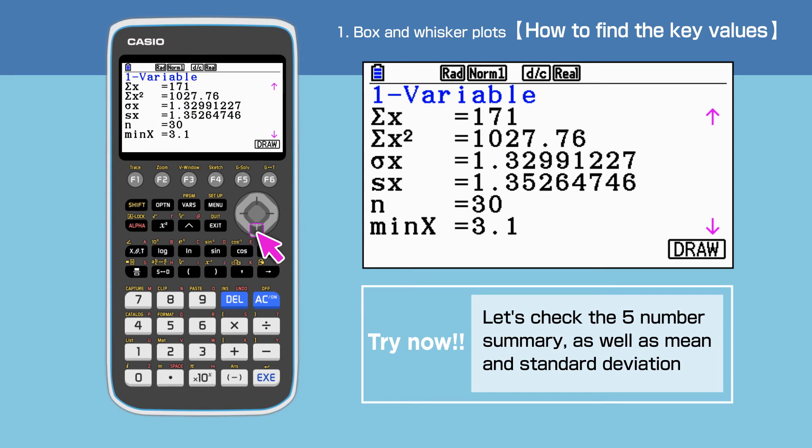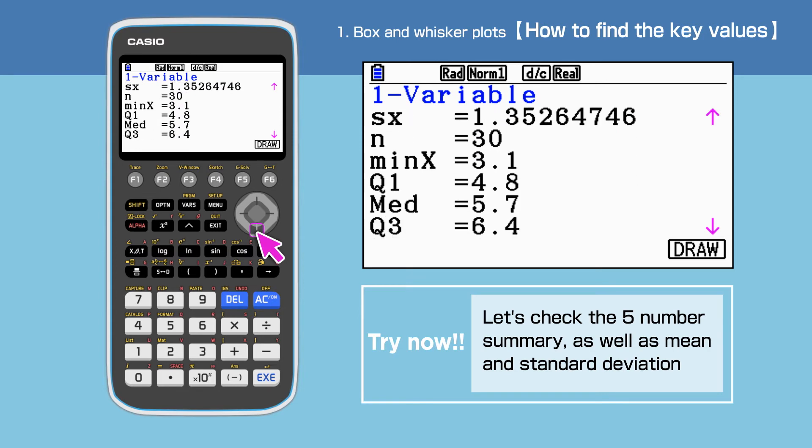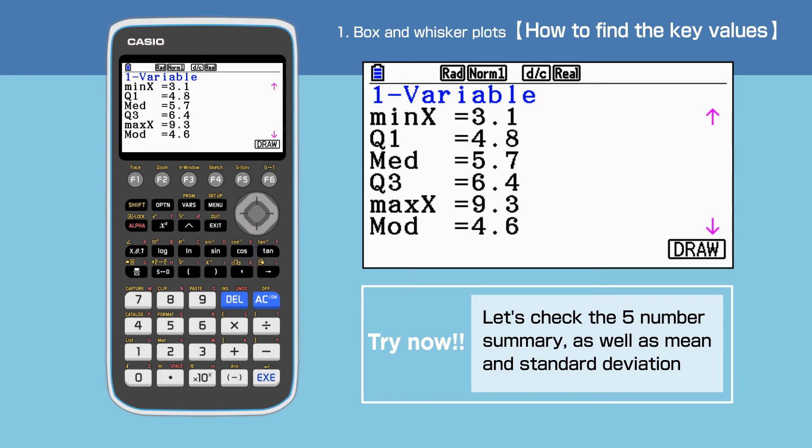Move the cursor down to check other values. Scrolling down the screen, we also find that the minimum is 3.1, the maximum is 9.3, the median is 5.7 and the mode is 4.6.